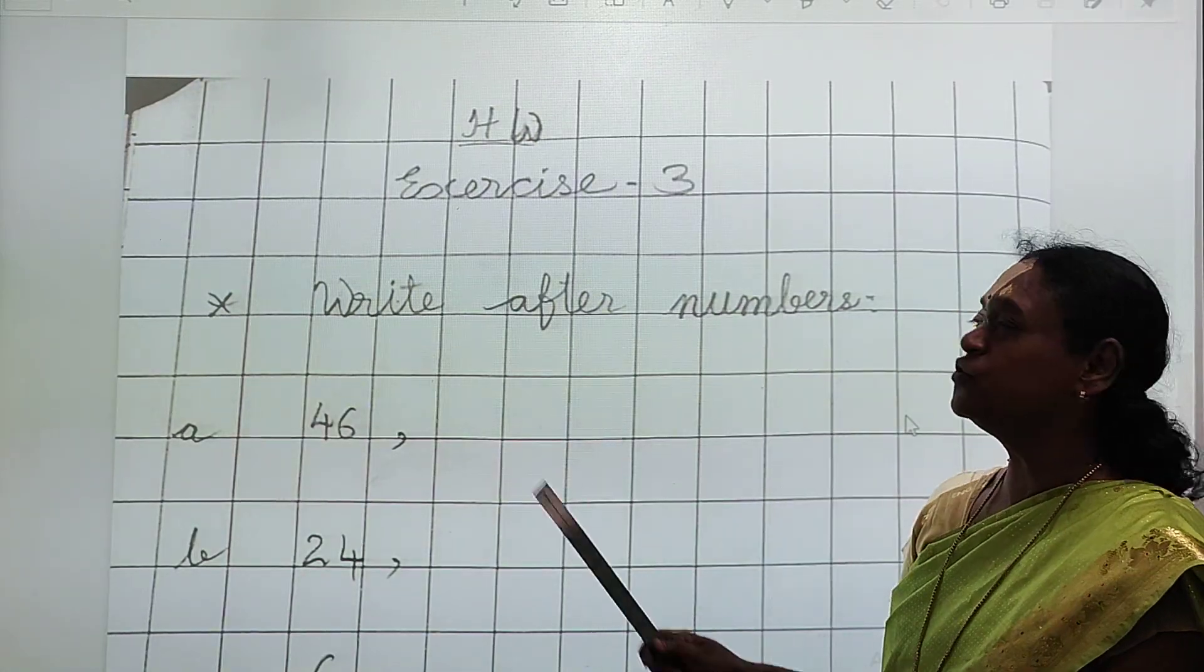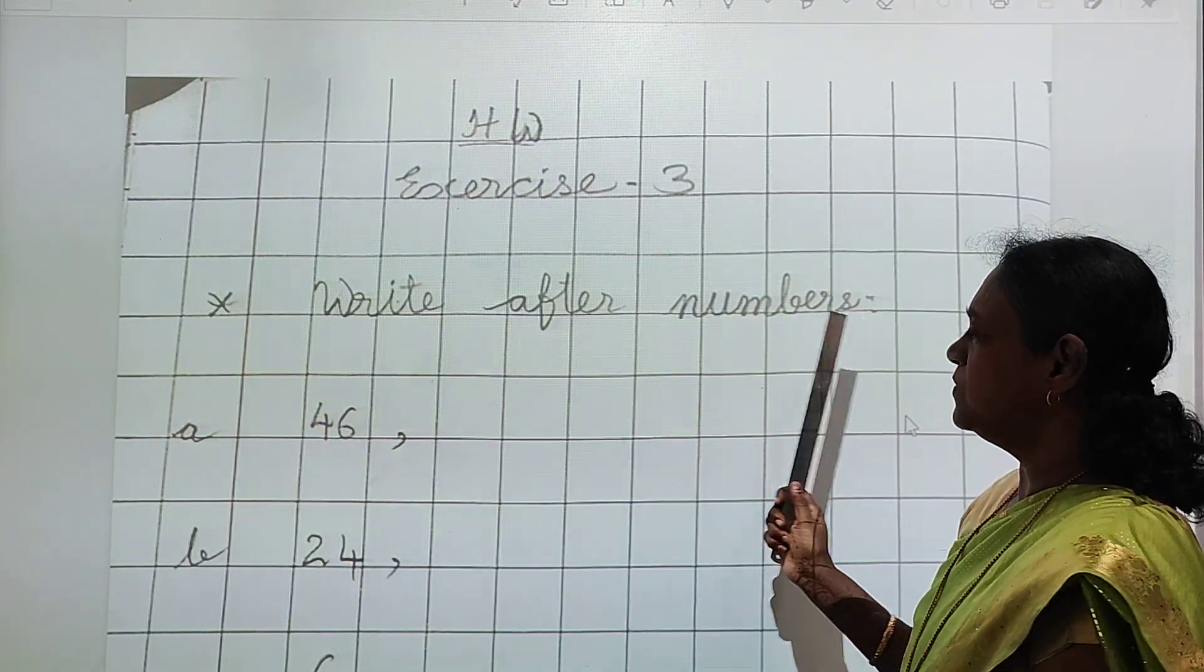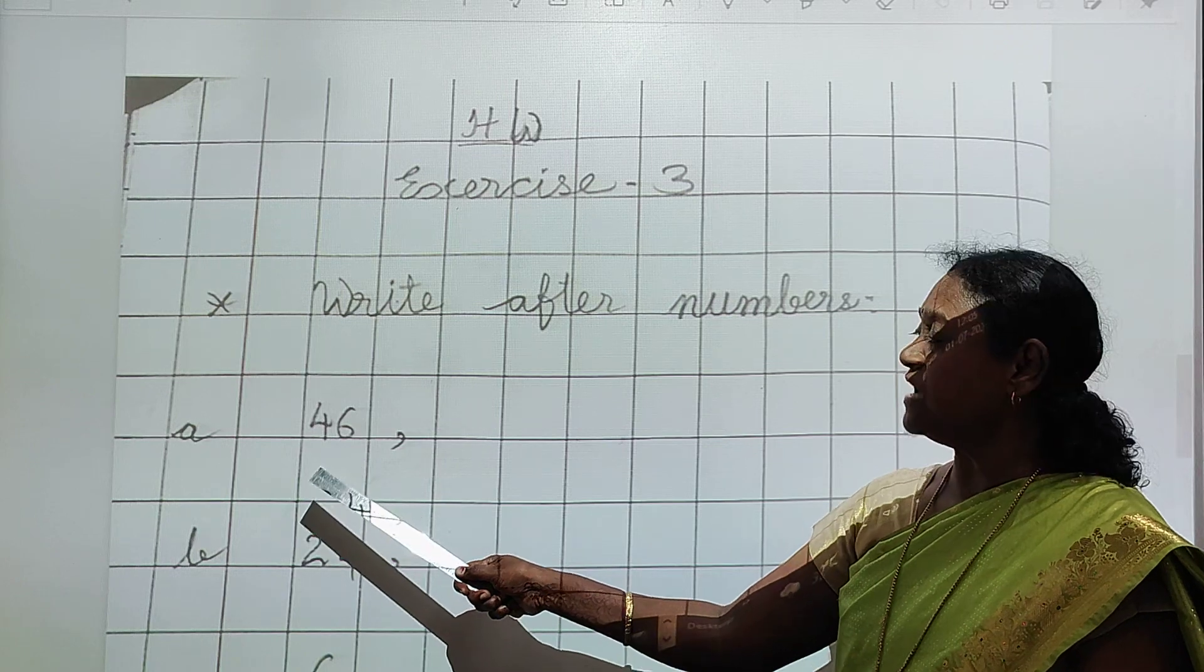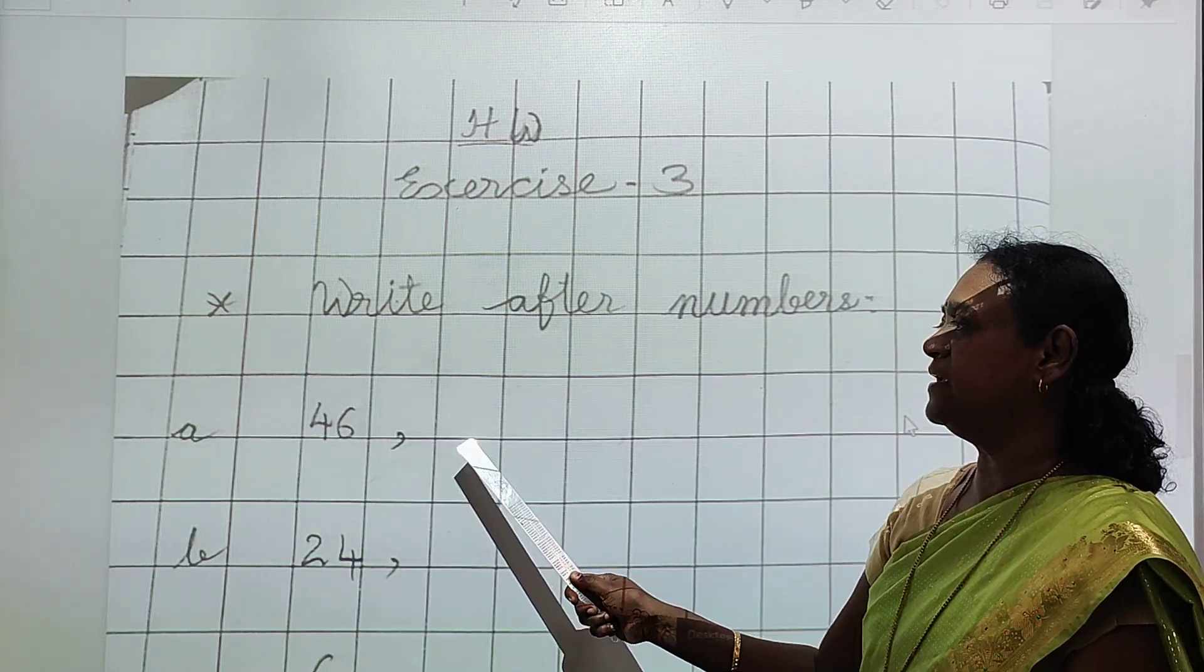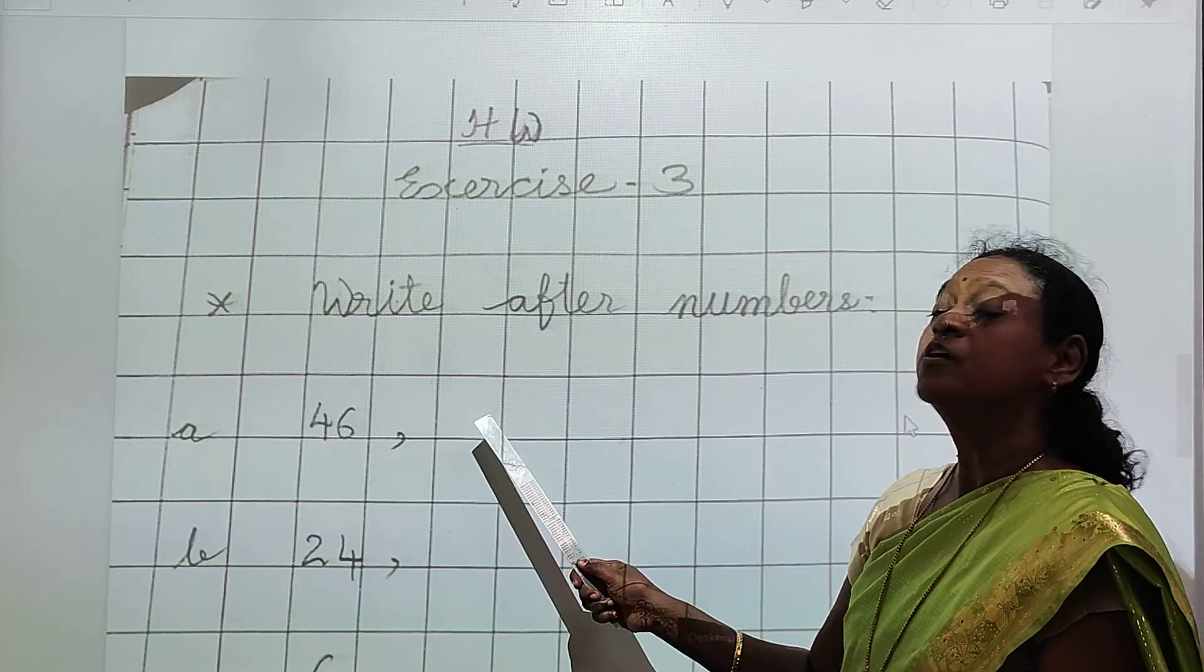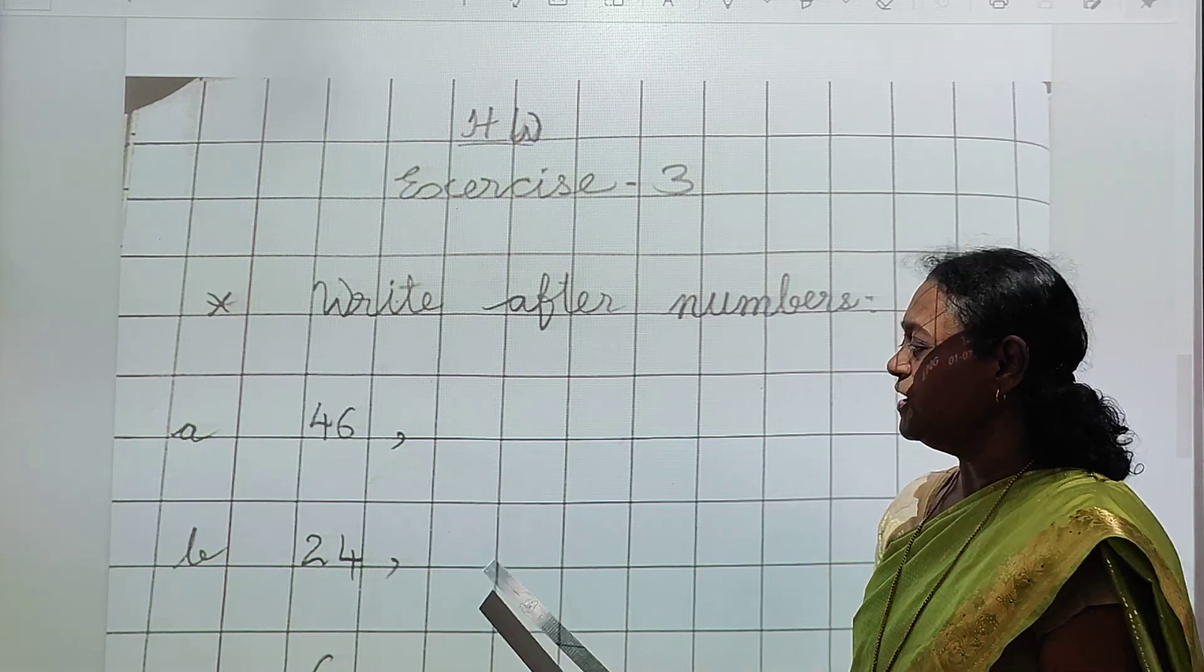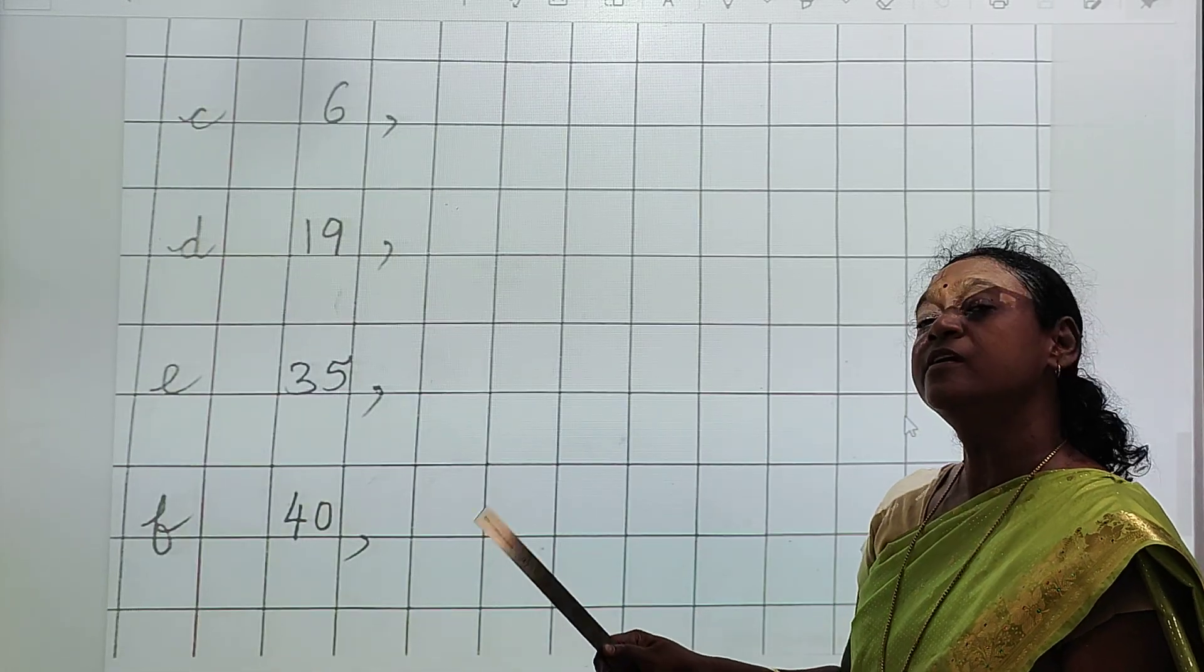Now third exercise you have to do homework. Exercise number 3. Write after numbers. Which number is this? 46. What comes after 46? 47. 24. Third kya karenge? Comma lagaenge. Aur yaha pe kya karenge? Answer likhenge. 24 ke baad? 25.